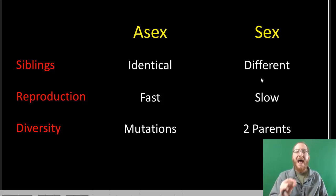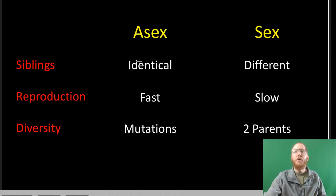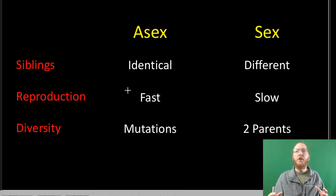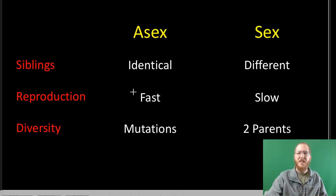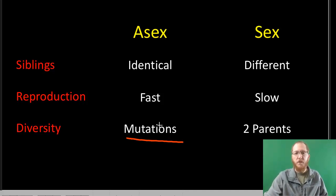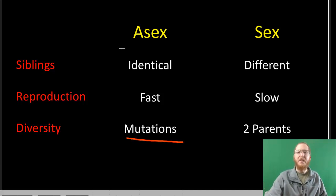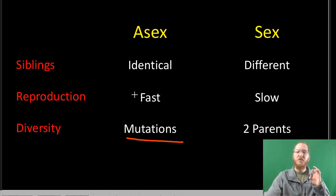Each of these has benefits. If you are small, unicellular, and reproduce a lot with a really fast lifespan — things like bacteria, unicellular eukaryotes, things that can reproduce in a matter of minutes or hours — they have so many reproductive events that they tend to just get mutations from DNA replication. Those mutations allow enough diversity to survive and thrive, even though they're attempting to produce identical organisms each time. But the key thing is you typically have to be small and reproduce very fast.